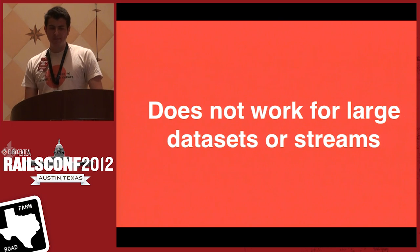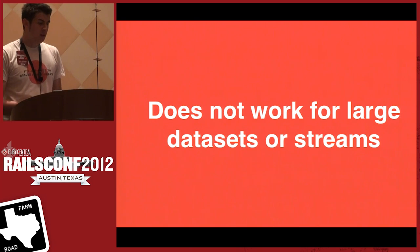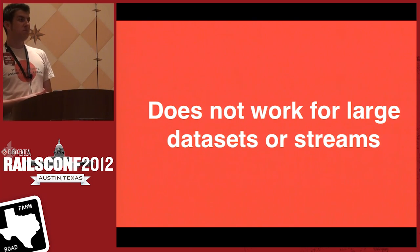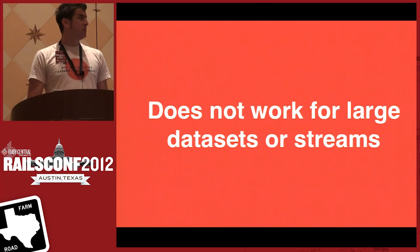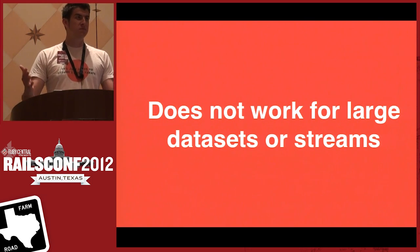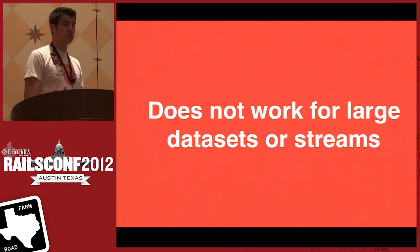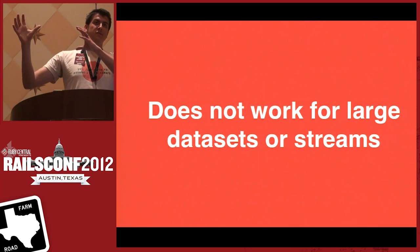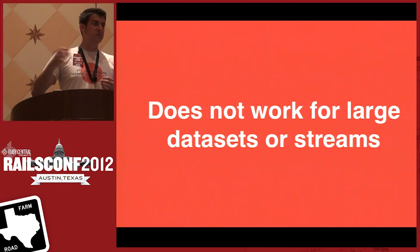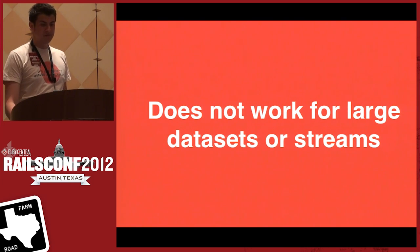Another limitation with long polling is that it starts to fall apart when you're dealing with large data sets. A great example would be a Twitter site stream — you have all these tweets coming in. Could you imagine trying to long-poll that stream to figure out that a tweet was deleted, or some state change in a model? It's really difficult. That's an example of why you have to start looking at streaming and why long polling can't work.